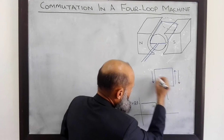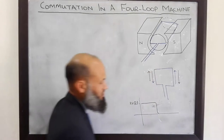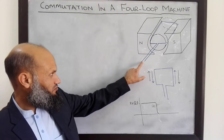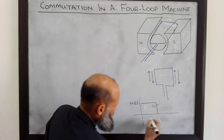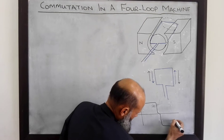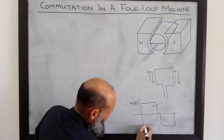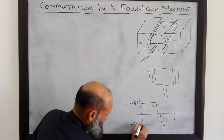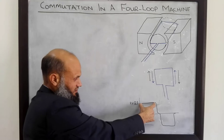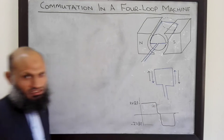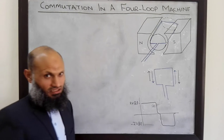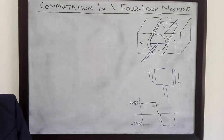However, the polarity of the voltage would have been reversed. Now this will be the new polarity. The voltage available at the terminals will again be 2VBL, but now with opposite polarity — that is, minus 2VBL. This voltage, although it remains constant for a certain time, is not unidirectional. The question is how to convert this bidirectional voltage signal into a unidirectional voltage signal.